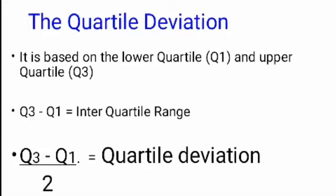We know that there are three quartiles: first quartile, second quartile, and third quartile. Quartiles divide all observations into four equal parts. The first quartile divides all observations such that below it there are 25% of observations and above it there are 75% of observations. The second quartile divides observations into two equal parts. The third quartile divides all observations such that above it there are 25% of values and below it there are 75% of values.